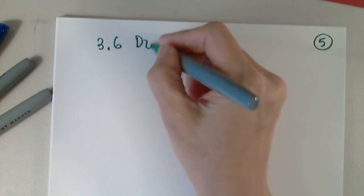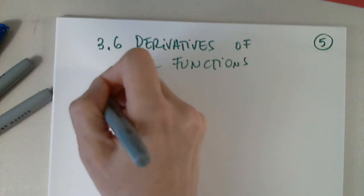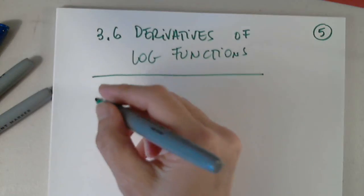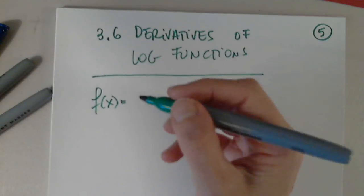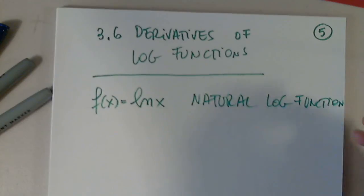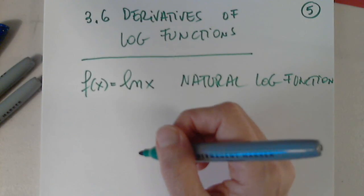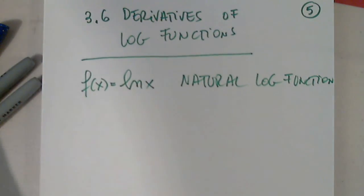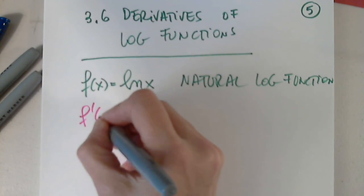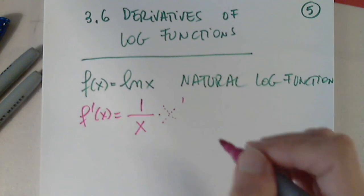Let's move on to Section 3.6: Derivatives of log functions. Let's start with the basic natural log function, ln(x). I'll give you the result directly: when we differentiate ln(x) we get 1 over x — I should write times x prime, but that's 1.